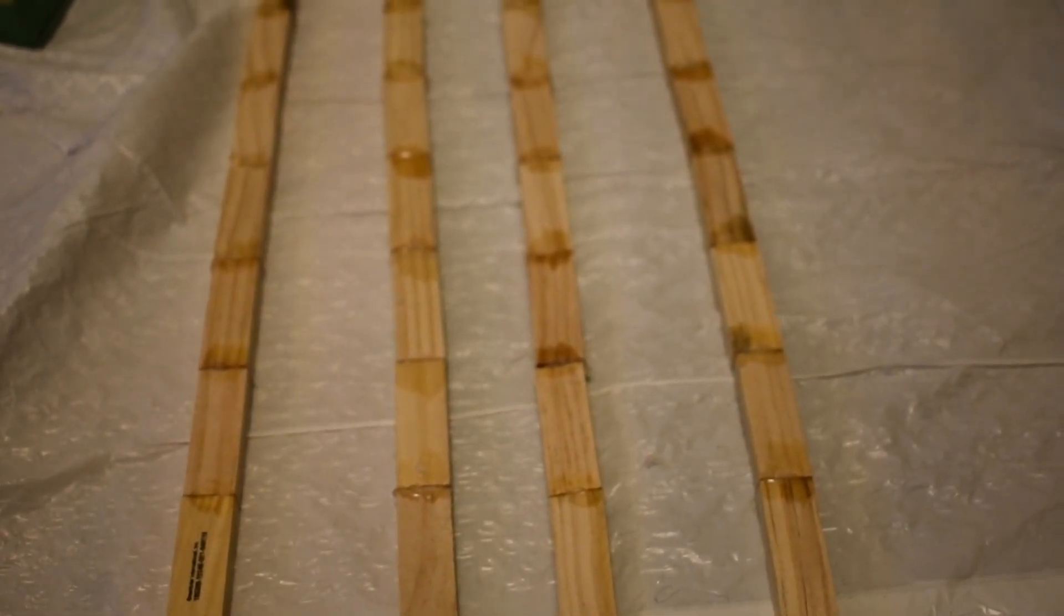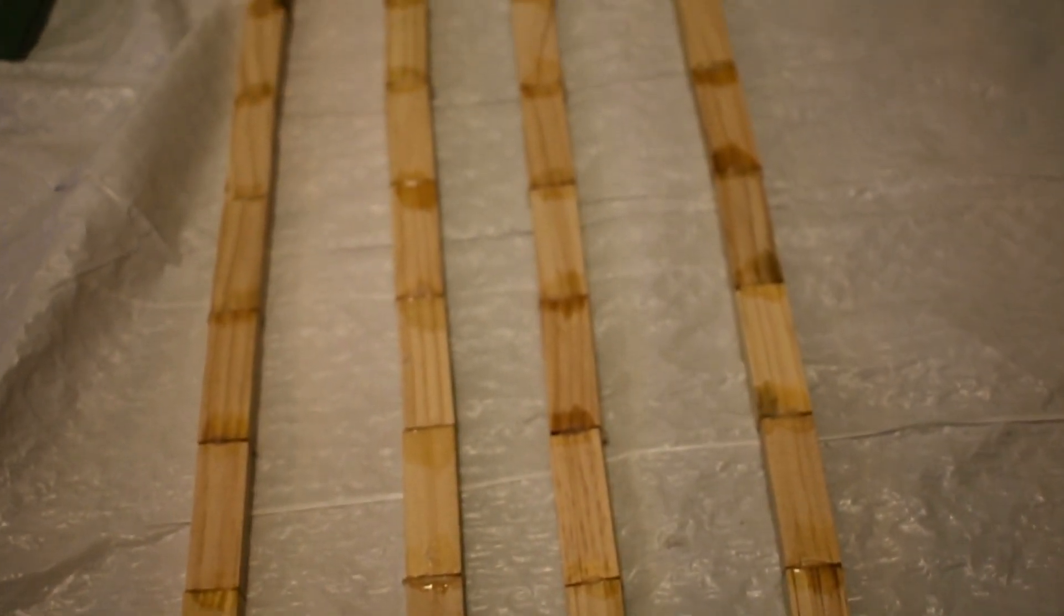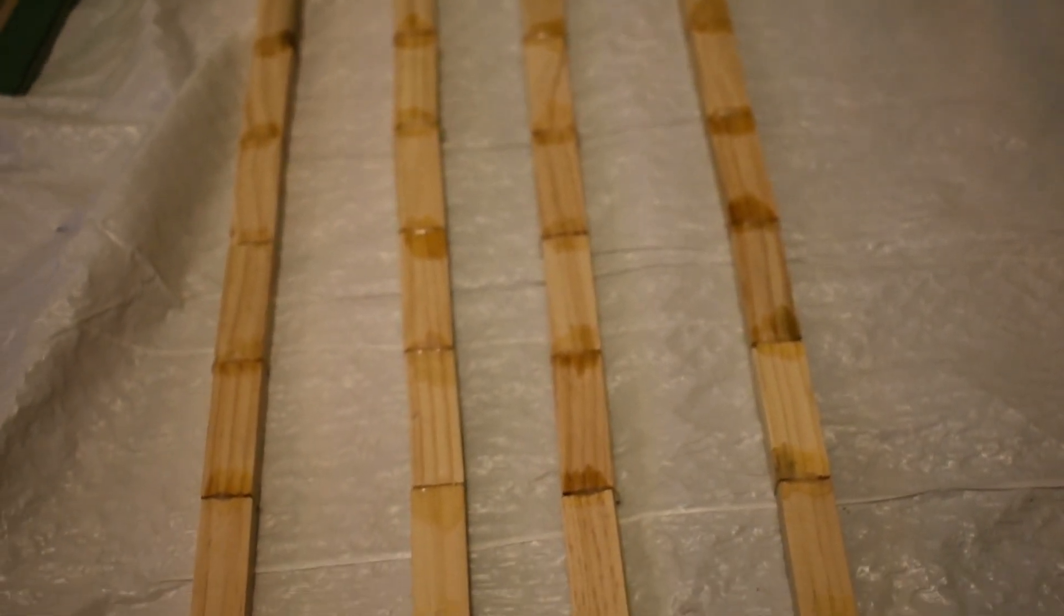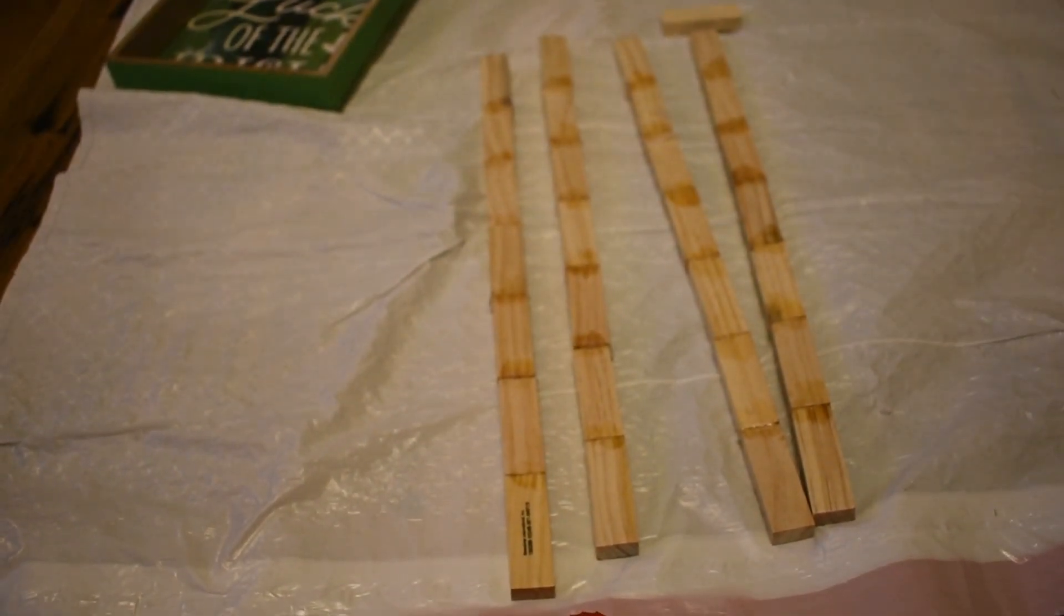All together you're going to have four of these, which will be the columns inside your lanterns. Now once you have all four done, you're going to go ahead and start painting everything, and you're going to take that Waverly white chalk paint. You're going to paint all of your columns, you're going to paint your base, and you're going to paint the top as well.